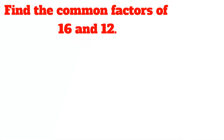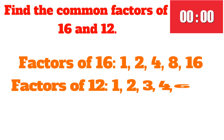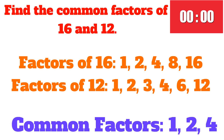Try finding the common factors of 16 and 12. Pause the video if you want more time on this question. Factors of 16 are 1, 2, 4, 8, and 16, and the factors of 12 are 1, 2, 3, 4, 6, and 12. So the common factors — the factors that are in both of these lists — are 1, 2, and 4.